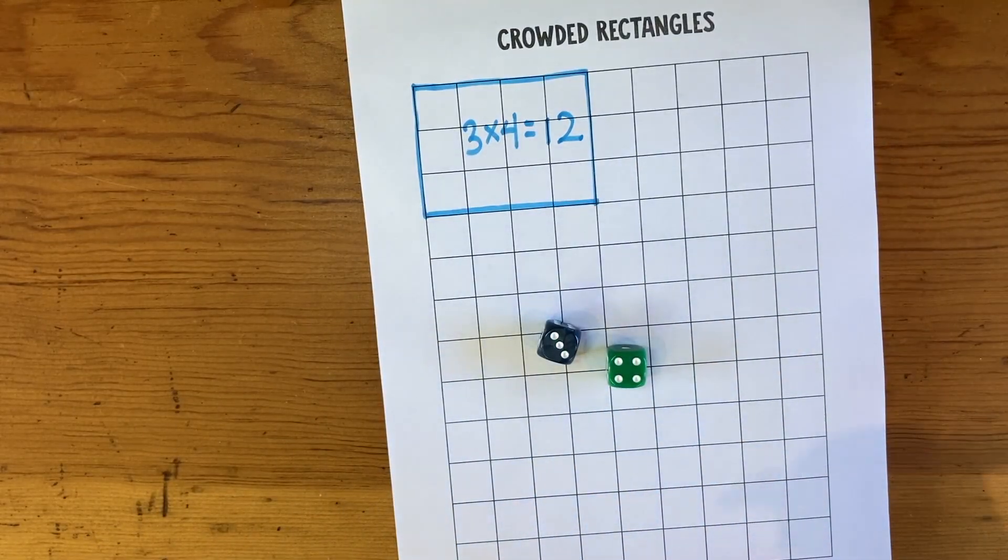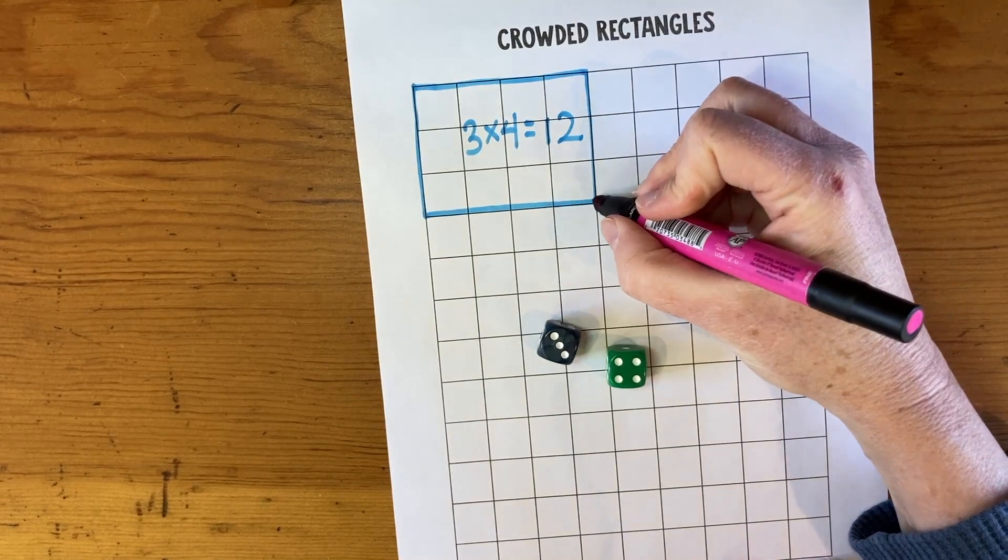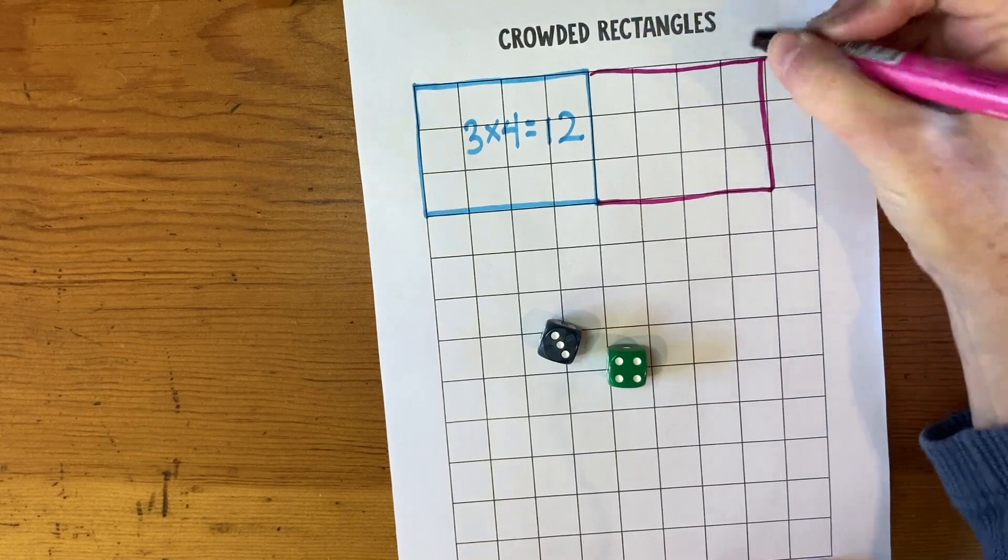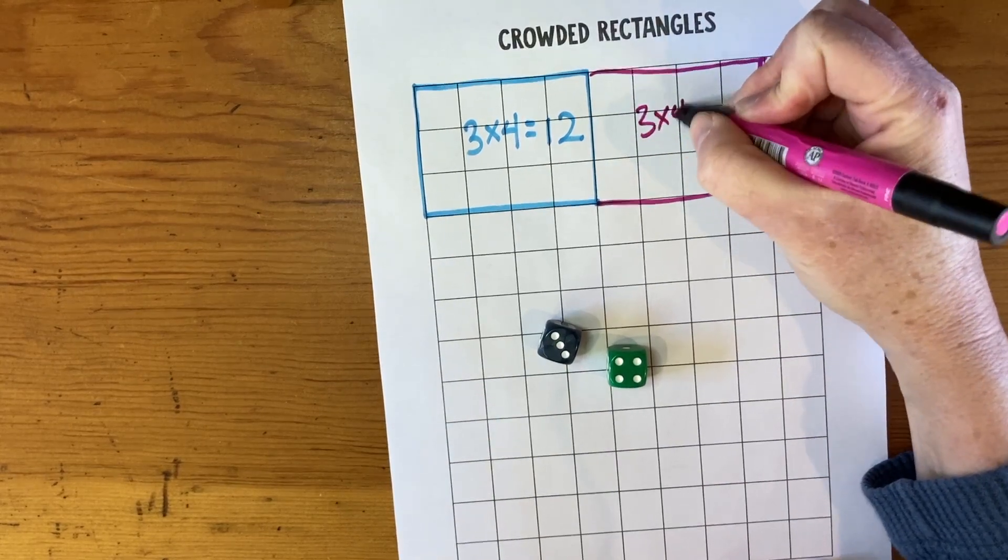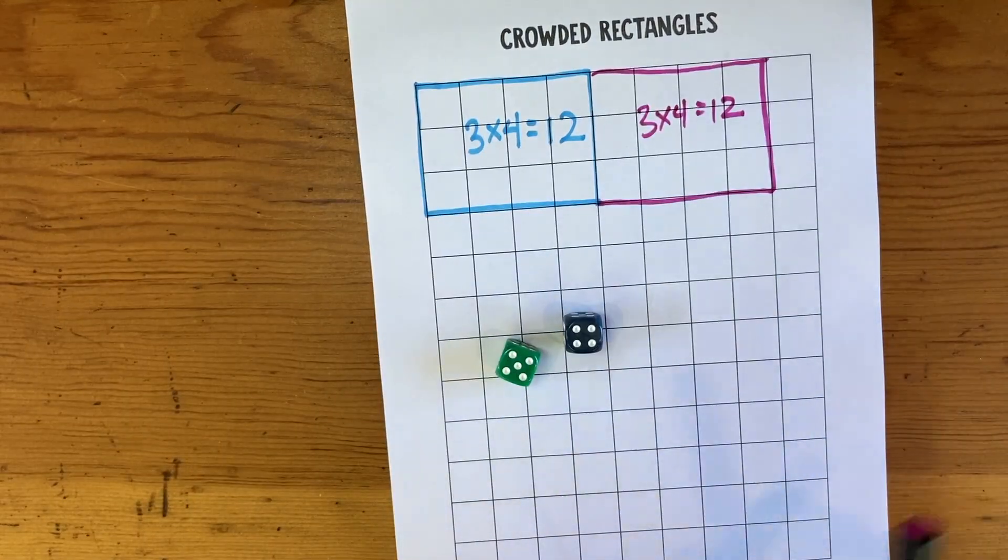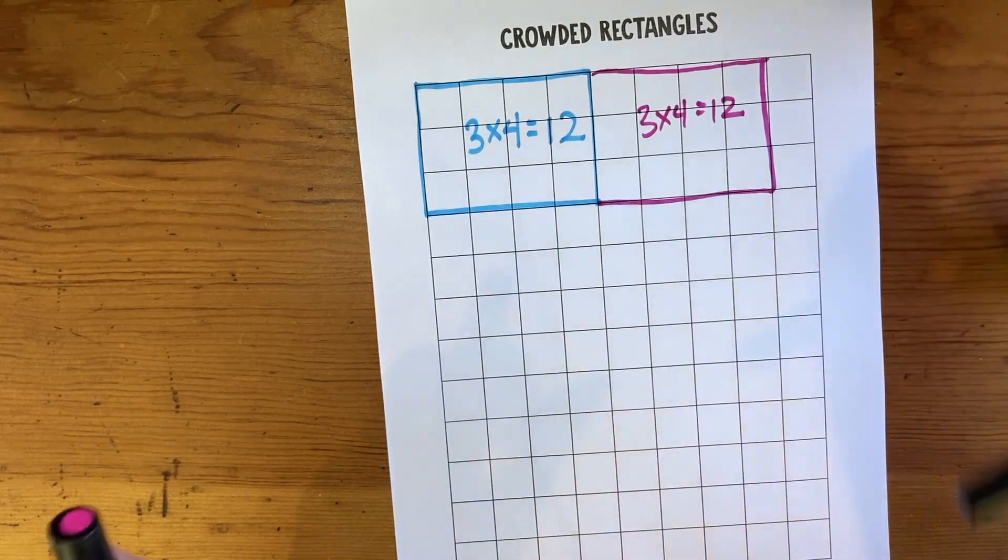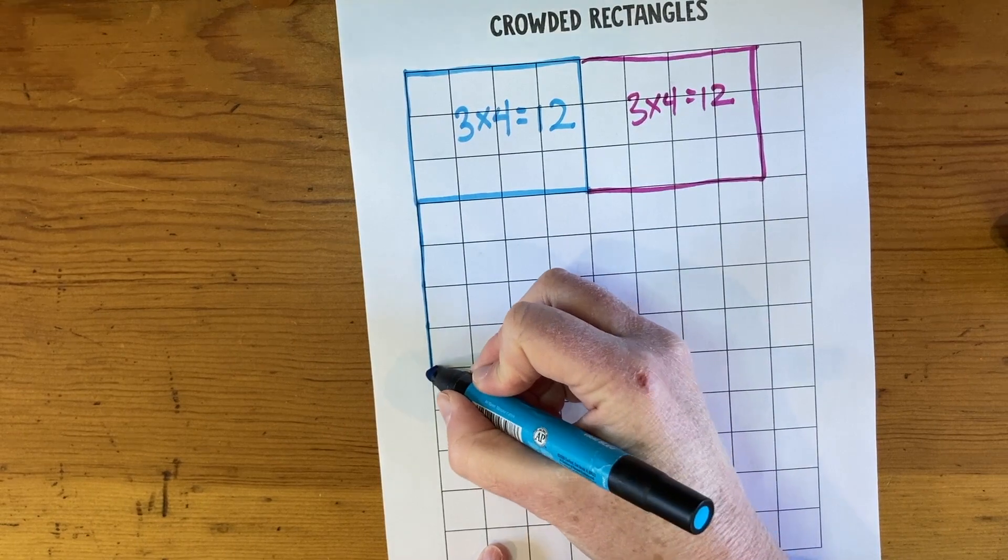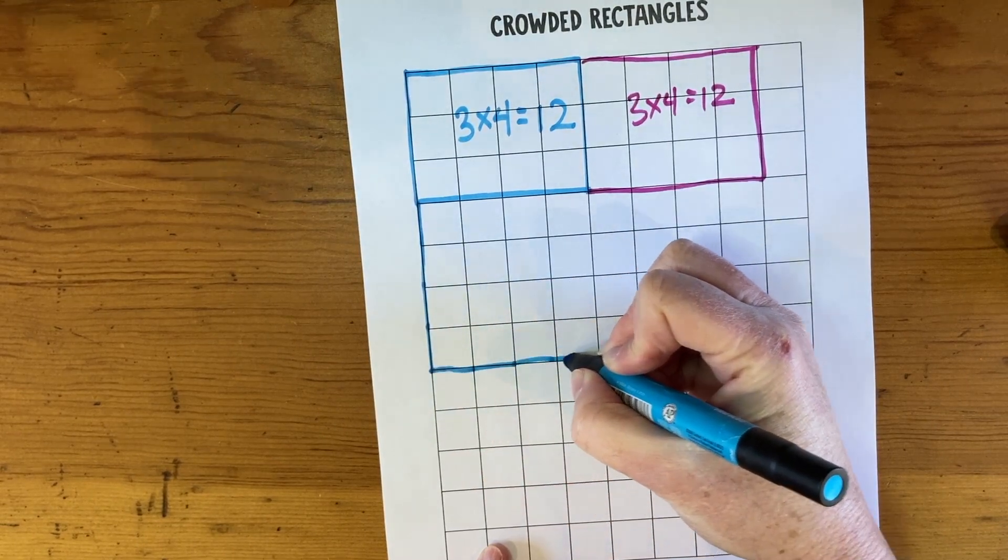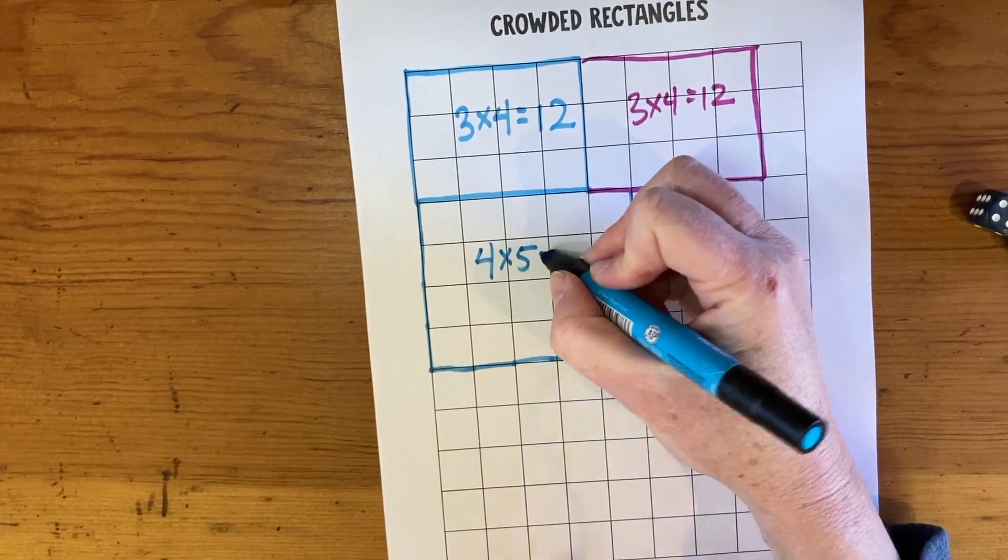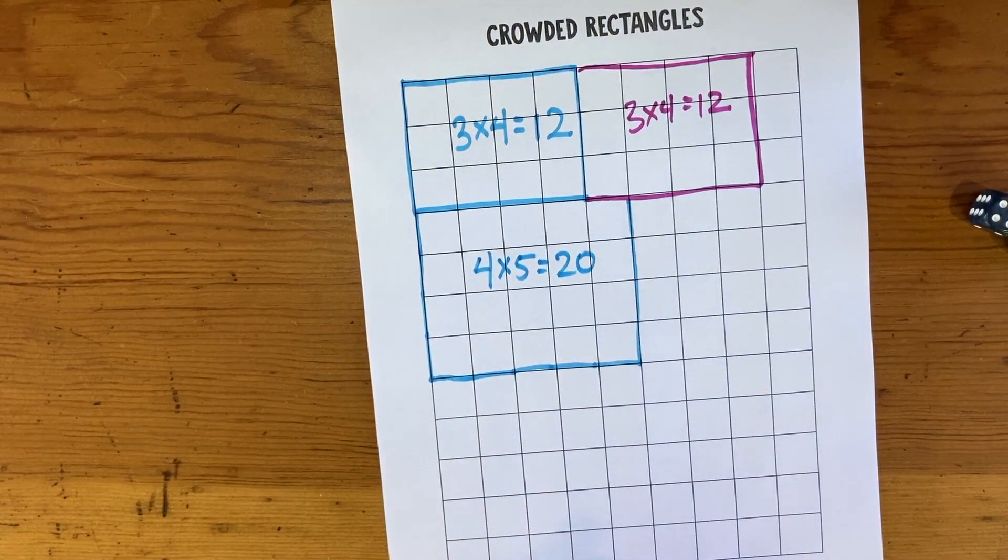That's funny, they got three times four too. Okay, let's make another one just like that, three times four equals twelve. So we're tied so far. Here's a four, four times five. One, two, three, four, one, two, three, four, five, so we'll do four times five equals 20.